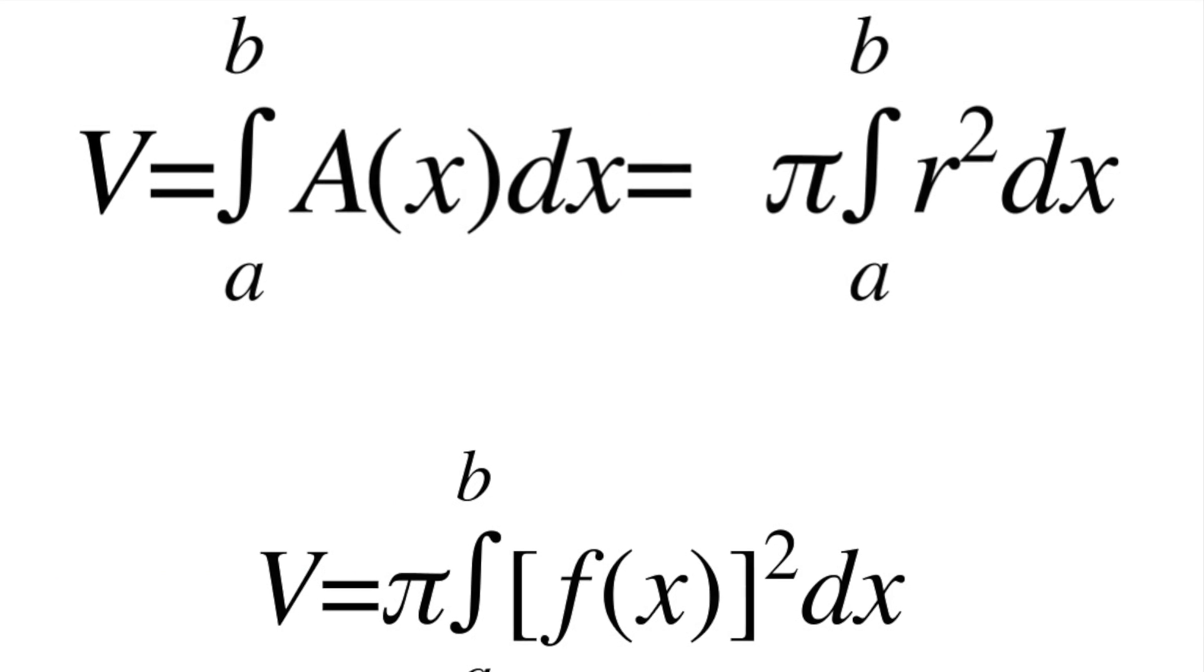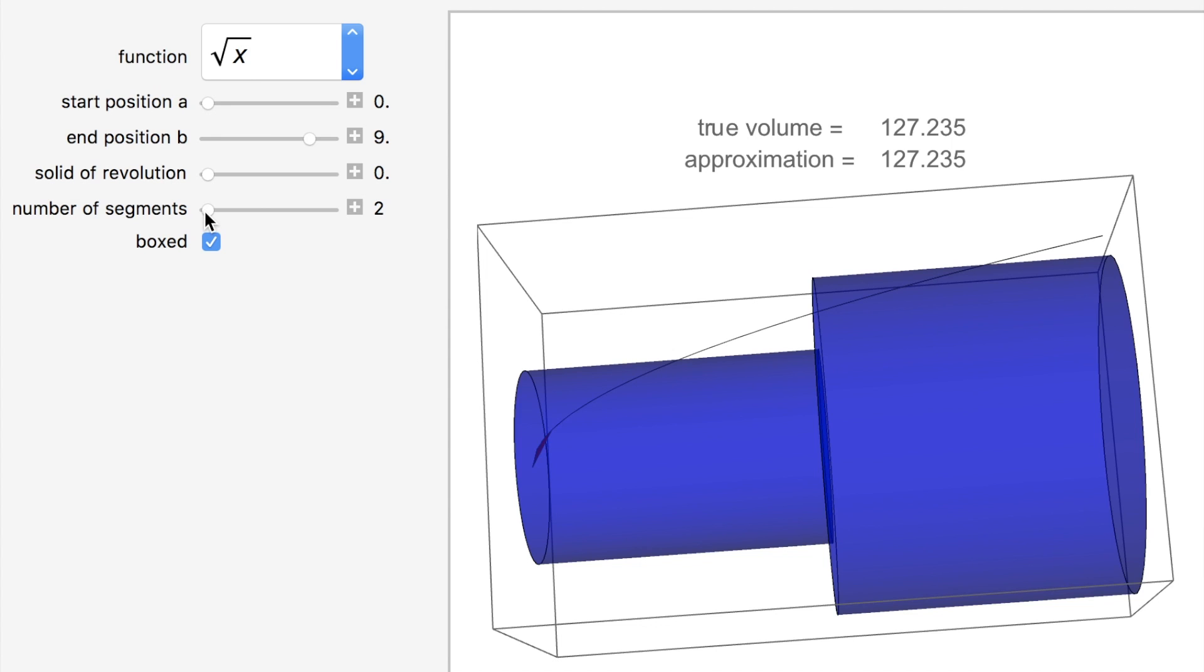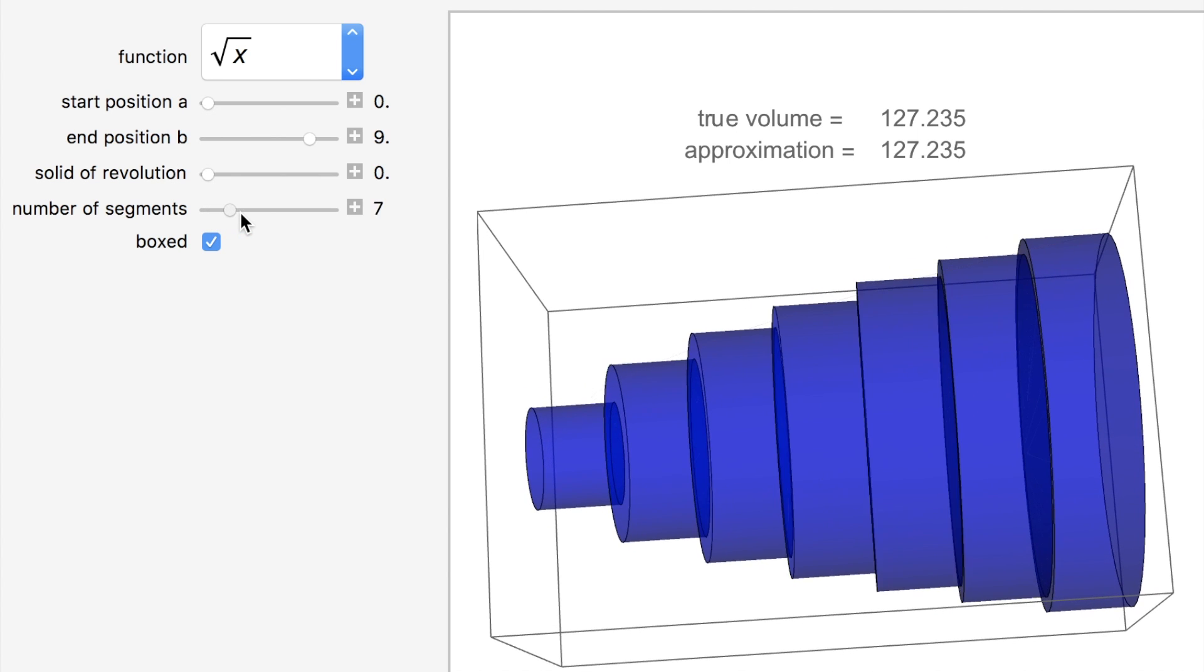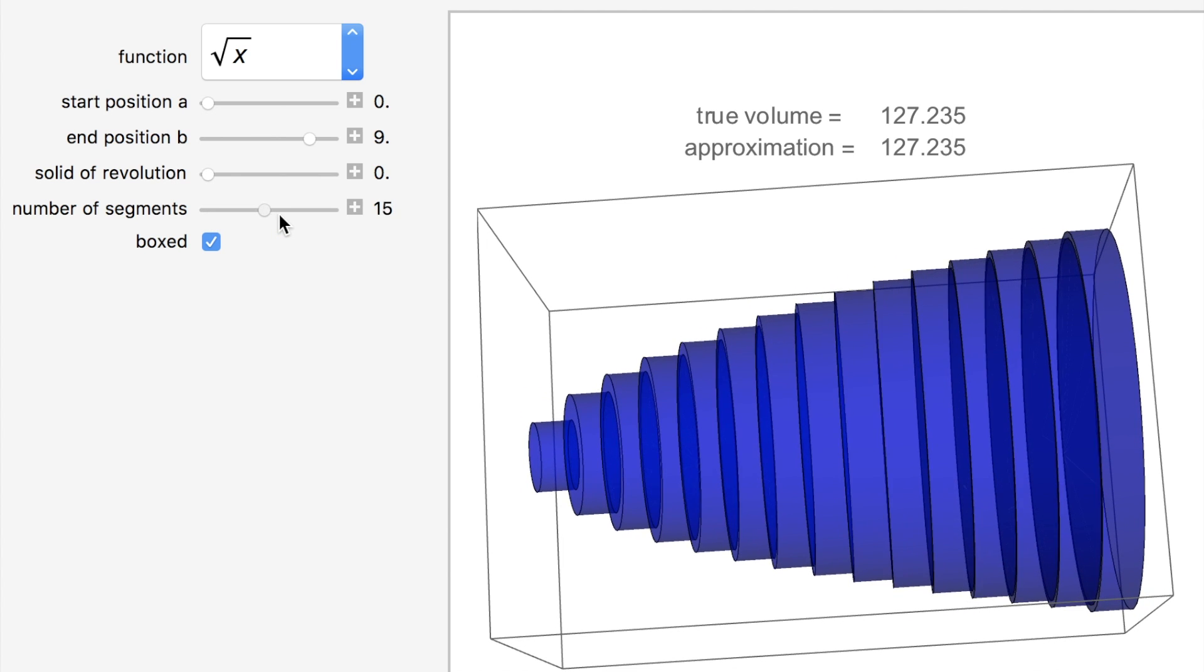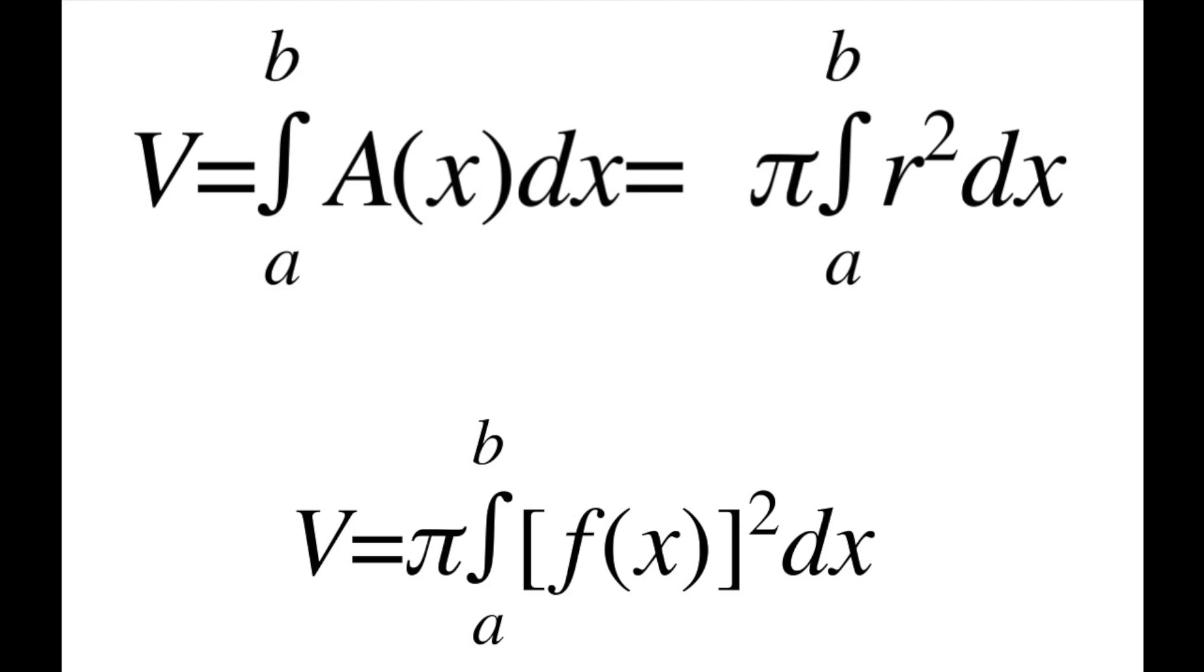By finding the definite integral of the volume of a cross-section of a solid from a to b, we're actually adding the volumes of an infinite amount of circular cross-sections with its corresponding dx or height from a to b. We can conclude that this method formula in terms of x is the integral of π f(x) squared dx from a to b.